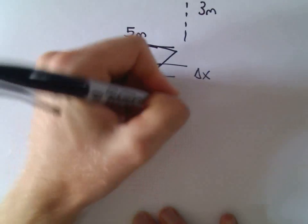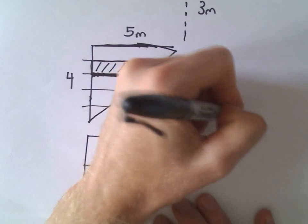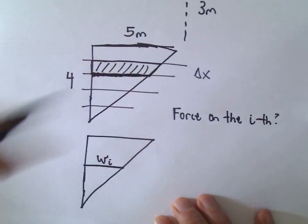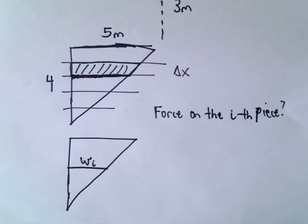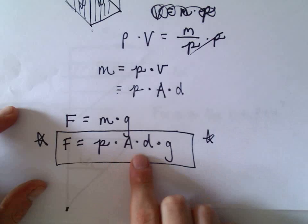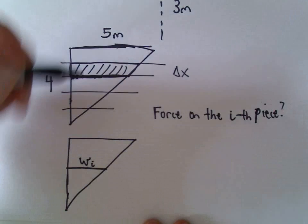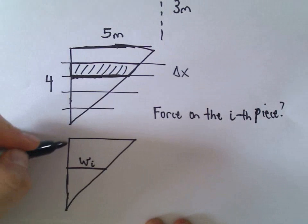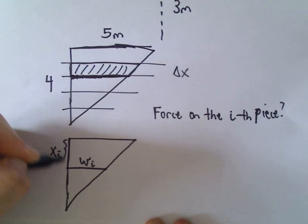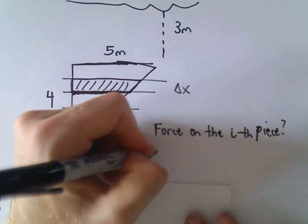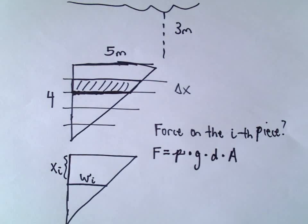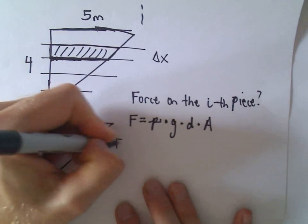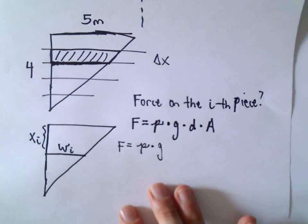The force on the i-th piece comes back to that key expression: force equals density times area times depth times gravity. Let's measure x from the top of the plate — so x sub i units down from the top. We want to fill in this expression generically: force equals density times gravity times depth times area.